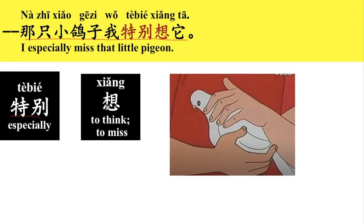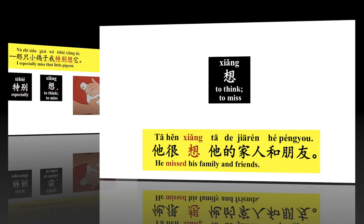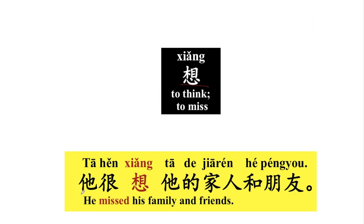想，it can mean to think or to miss. 在这里，这个想是to miss. 我特别想他。好，我可以说，他很想他的家人和朋友。He missed his family and friends. 好，那这个家人就是family members.